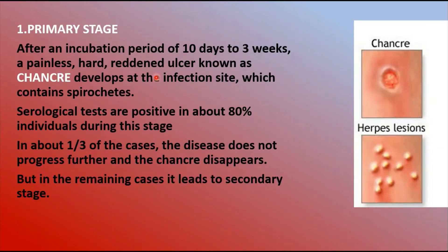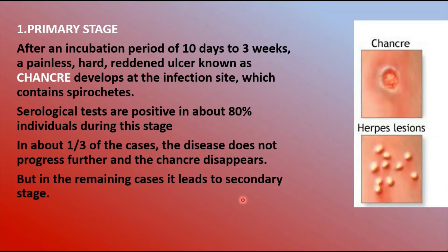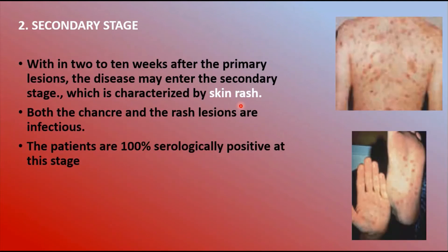In the primary stage, after an incubation period of about 10 days to three weeks, a painless chancre develops at the infection site containing spirochetes. Serological tests are positive in about 80% of individuals during this stage. In about one-third of cases the disease does not progress further and the chancre disappears, but in the remaining cases it leads to the secondary stage.